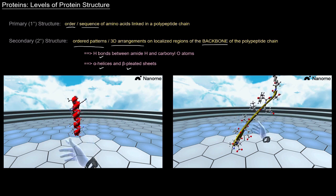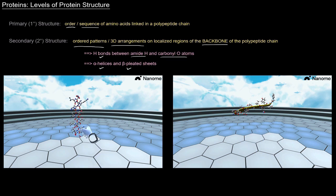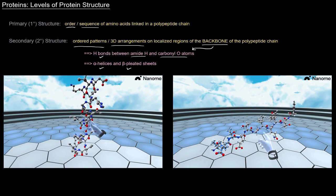But the hydrogen bonds specifically are between the amide hydrogens and the carbonyl oxygen atoms. And those atoms are the atoms of the backbone of a polypeptide chain.